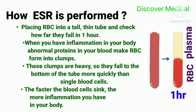The ESR test is performed by placing red blood cells into a tall thin tube and checking how far they fall in one hour. When you have inflammation, abnormal proteins in your blood make red blood cells form into clumps. These clumps are heavy, so they fall to the bottom more quickly than single blood cells. The faster the cells sink, the more inflammation you have in your body.